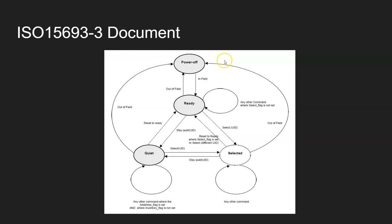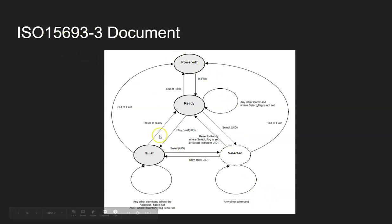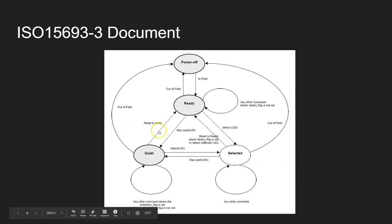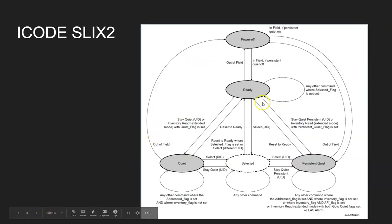This is what I meant by saying the state or transition diagram. This diagram is taken from the IS-15693-3 document and you're going to understand what this diagram is all about. This is a similar state diagram but from the tag called iCODE SLIX2. If you compare this and the previous one, about 80% of this diagram is present in the standard. Every tag manufacturer can have their own additional state diagrams.